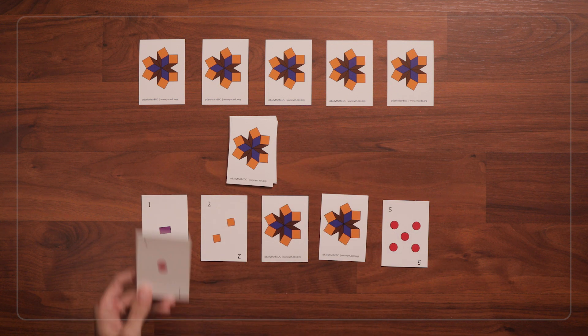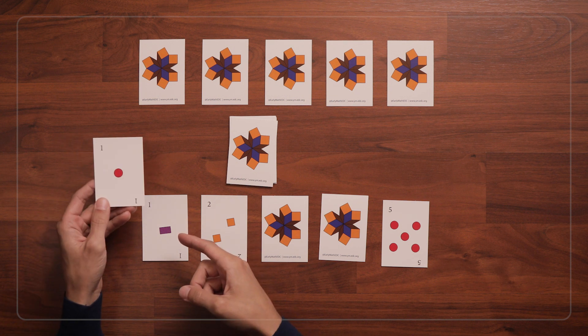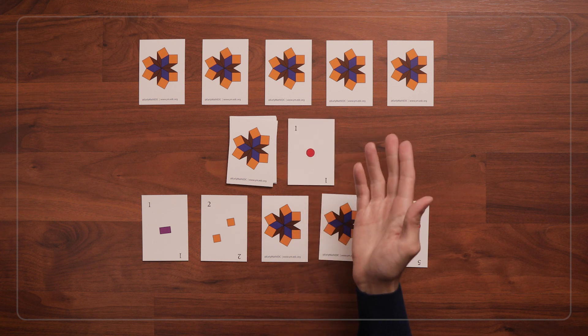Then I'll flip this card, and I get a 1 again. So since I've already replaced my first card, I'll put this card in the middle and it becomes the next player's turn.